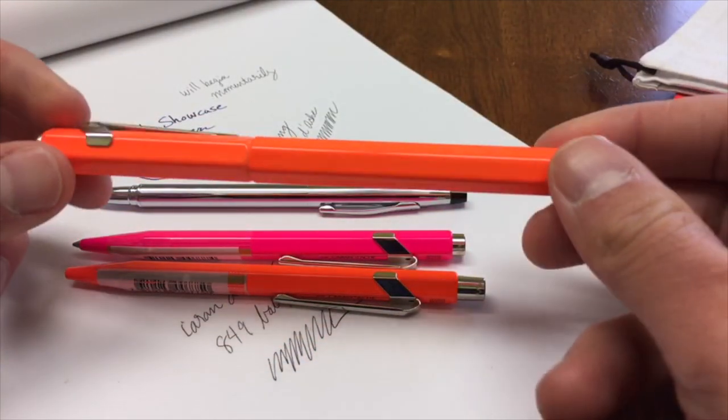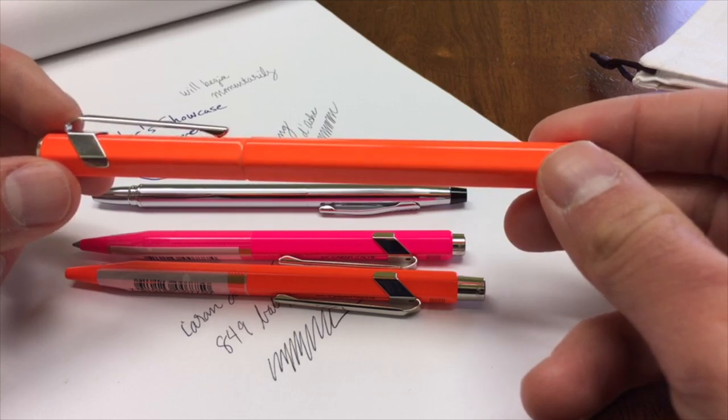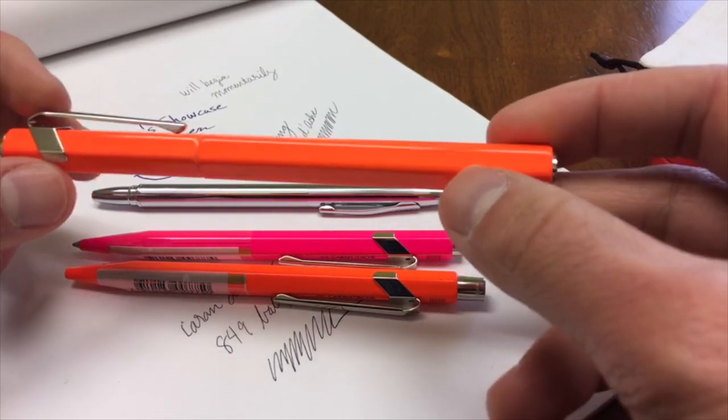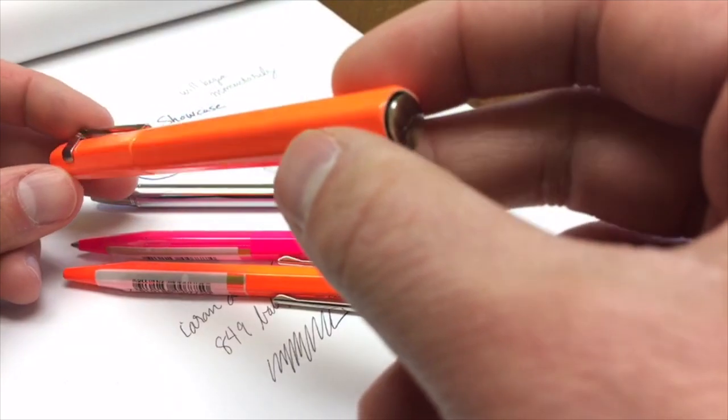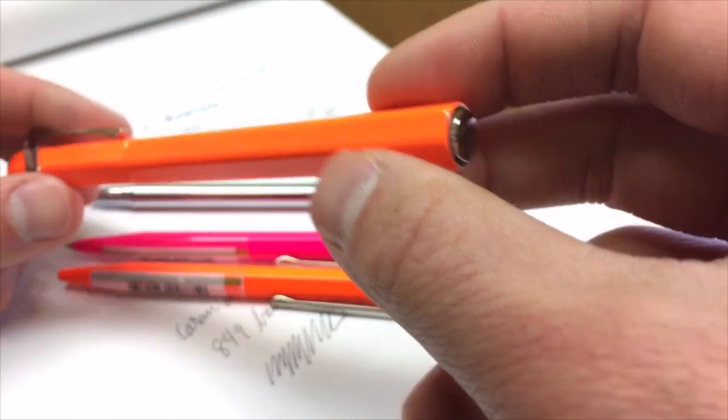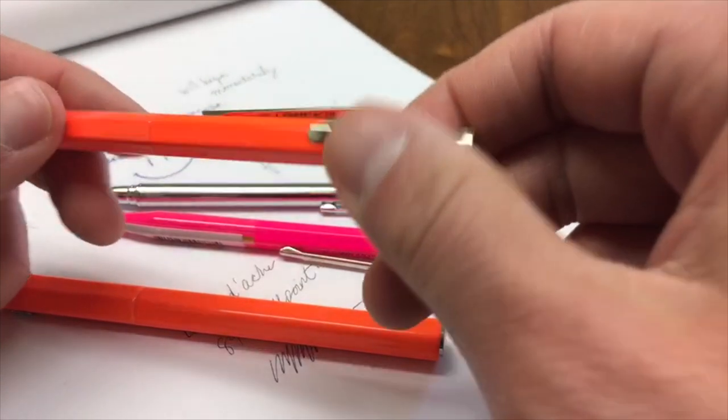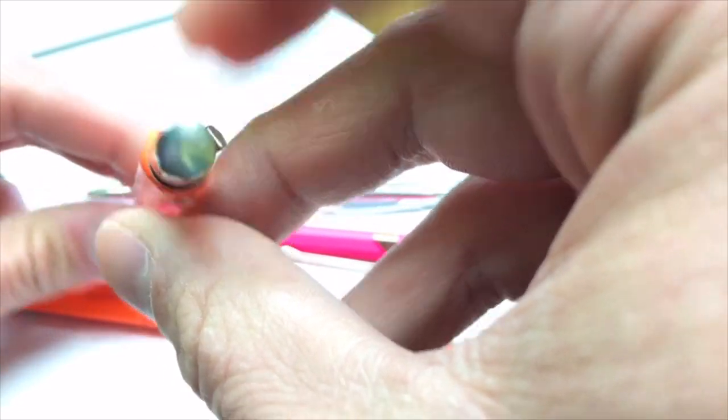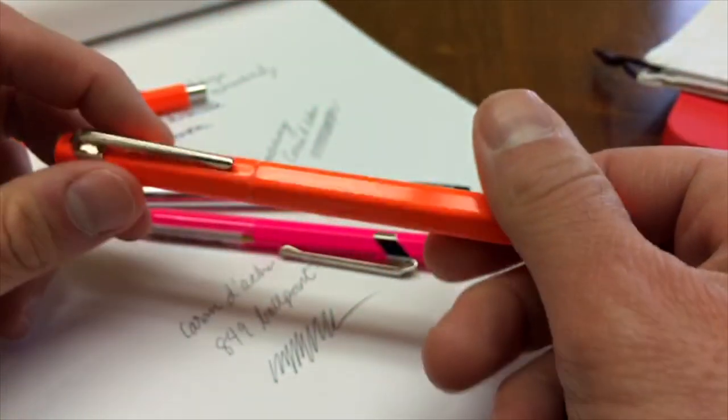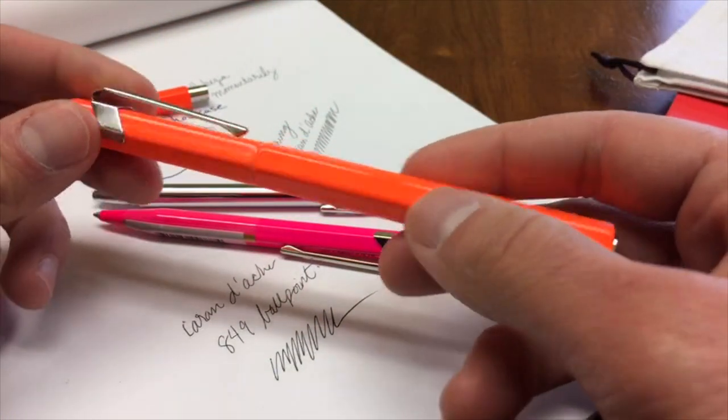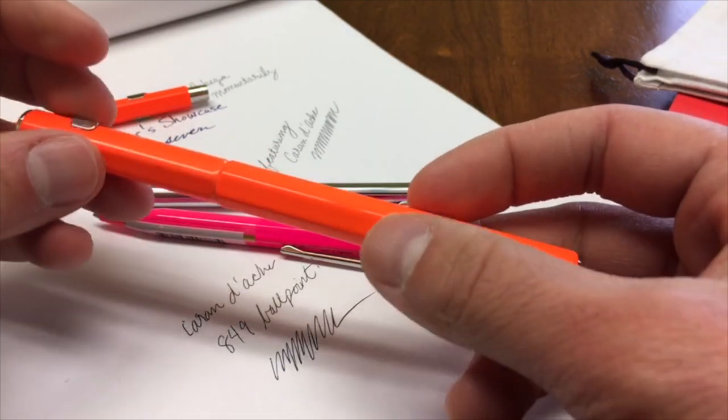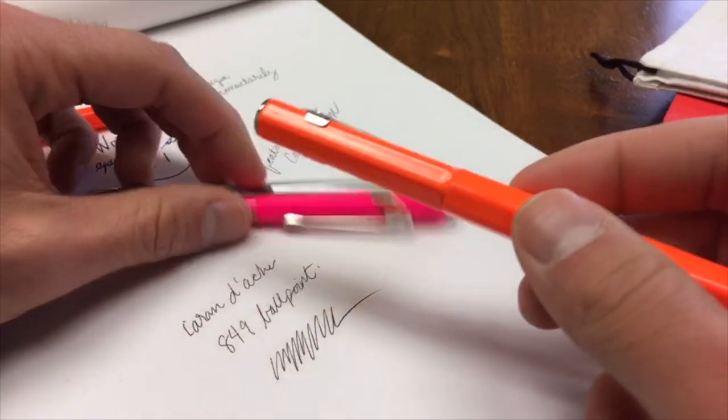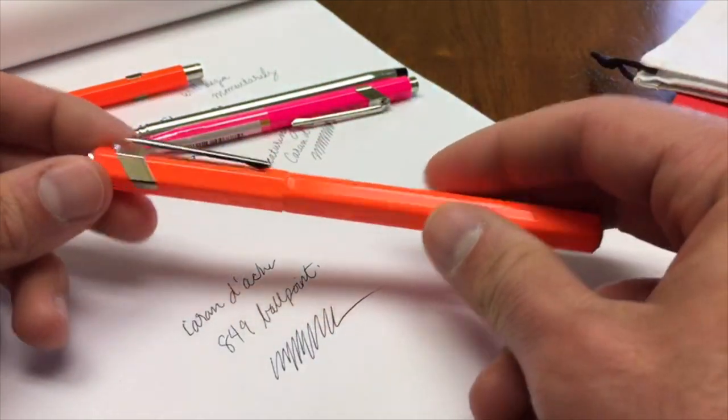They have the same aluminum barrel pen with a lacquered finish. That's why it's got a polished and almost rounded profile to those hexagonal sides. The 849 ballpoint's got a sharper edge to those corners. This is a little bit more rounded, which is intentional for a smoother feel.